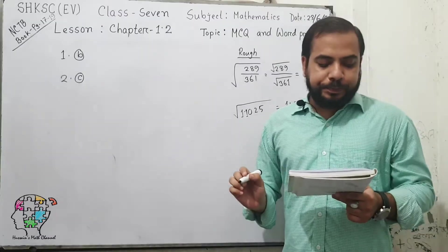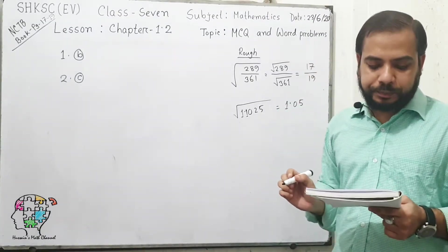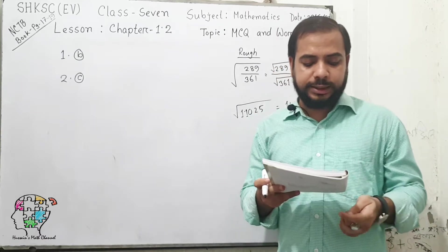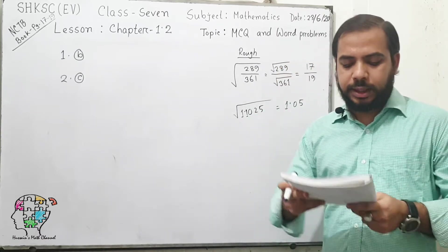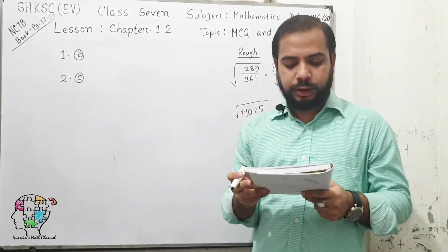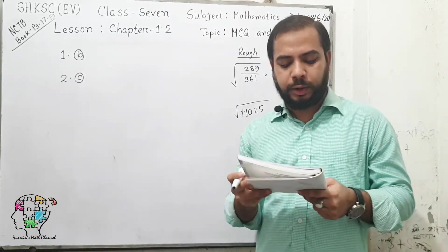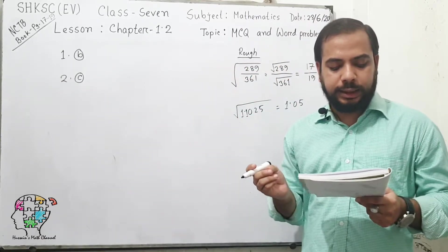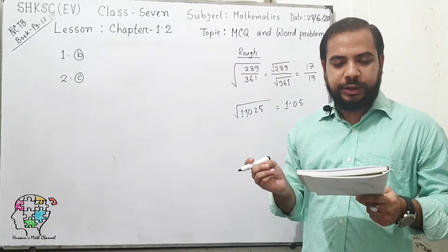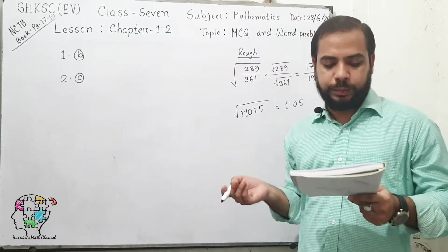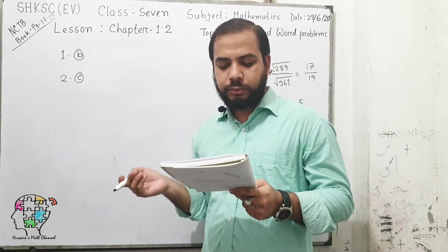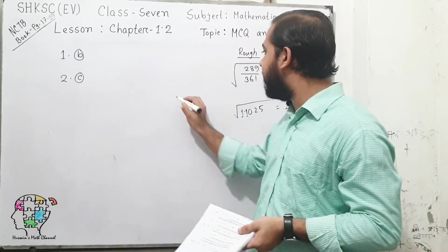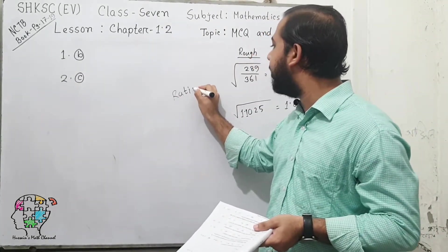Now look at question number 3. A rational number is: option 1 is 0, option 2 is 5, and option 3 is 5 by 2. What will be the answer? What is a rational number?